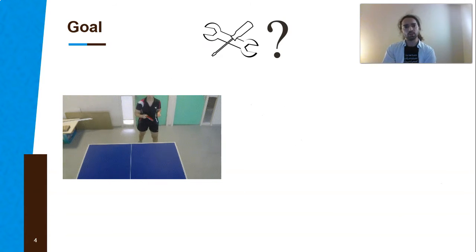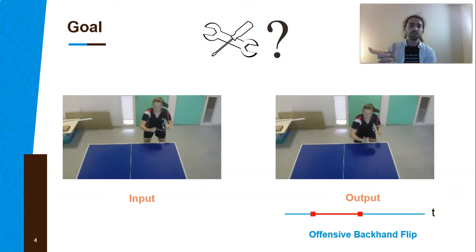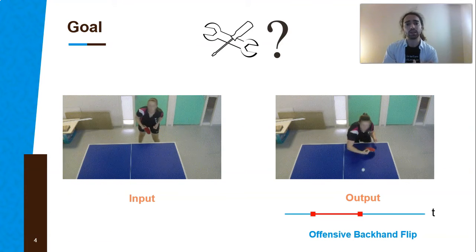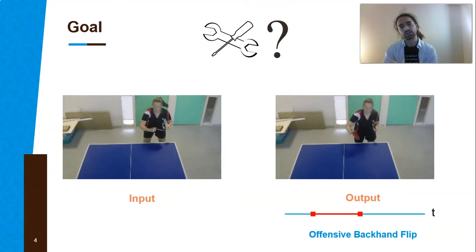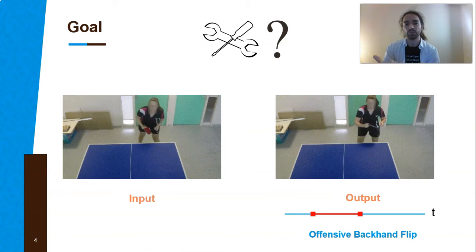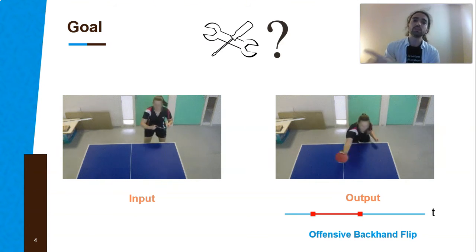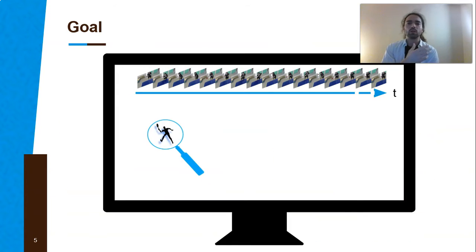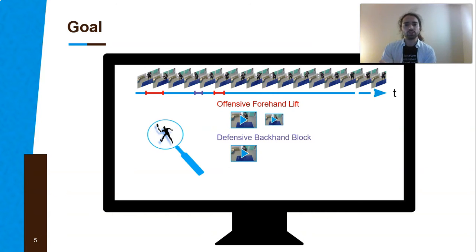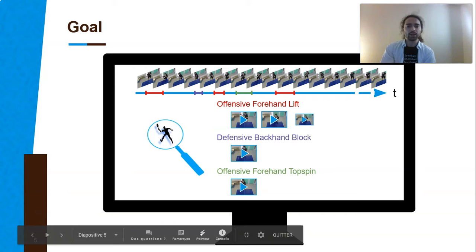We apply that to table tennis, and the goal from a given video is to be able to segment in time the stroke that has been performed, but also to get its classification. At the difference from classical action classification, here we deal with fine-grained action classification because we are focusing on only one sport with different strokes.